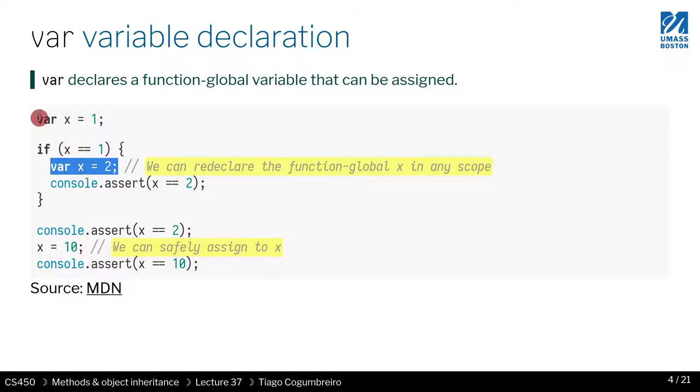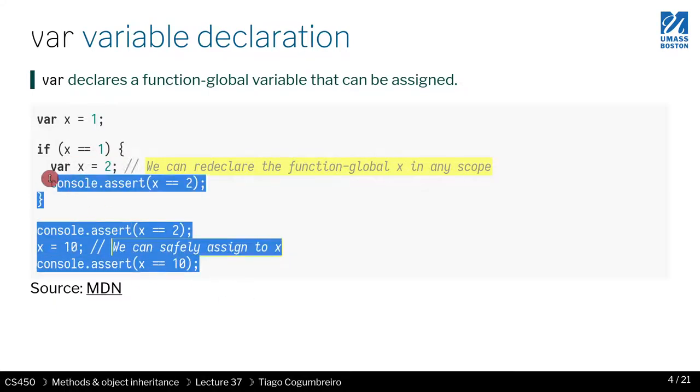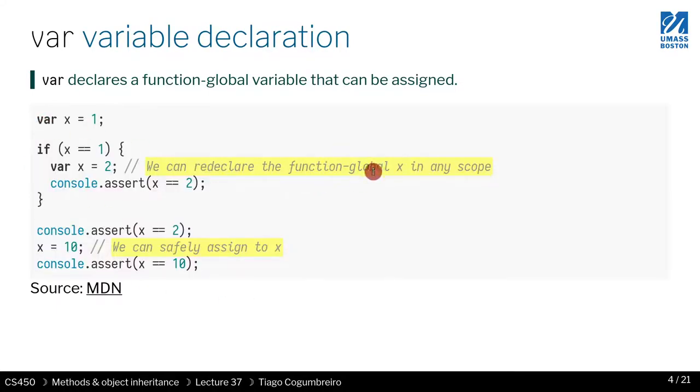And it's global to the context in which this code is running. So if it's inside a function, it will be only within that function. And if it's outside, then it will be everywhere. Let's just focus on functions for now.